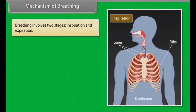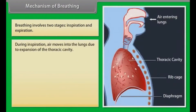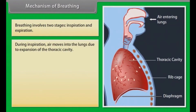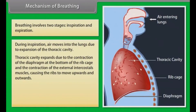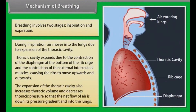Mechanism of Breathing. Breathing involves two stages: inspiration and expiration. During inspiration, air moves into the lungs due to expansion of the thoracic cavity. The thoracic cavity expands due to the contraction of the diaphragm at the bottom of the rib cage and the contraction of the external intercostal muscles, causing the ribs to move upwards and outwards. This expansion increases thoracic volume and decreases thoracic pressure, so that the net flow of air is down its pressure gradient and into the lungs.